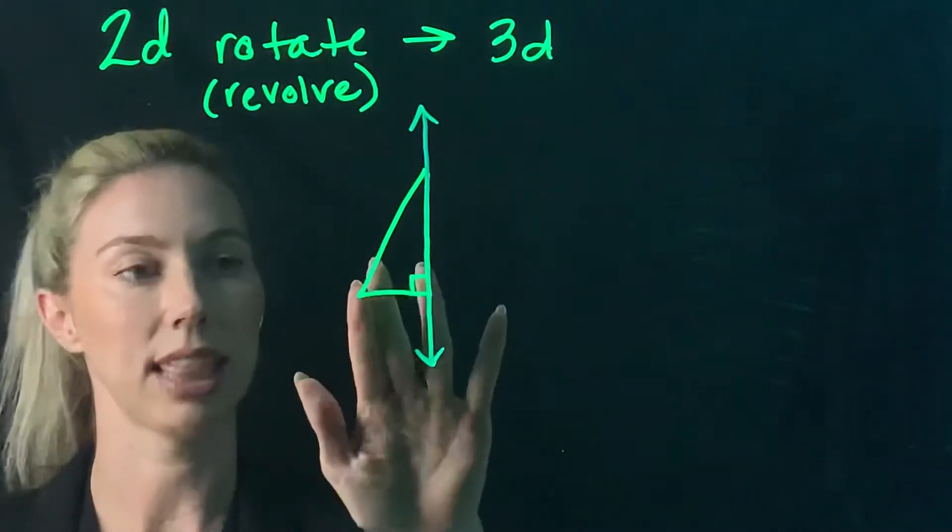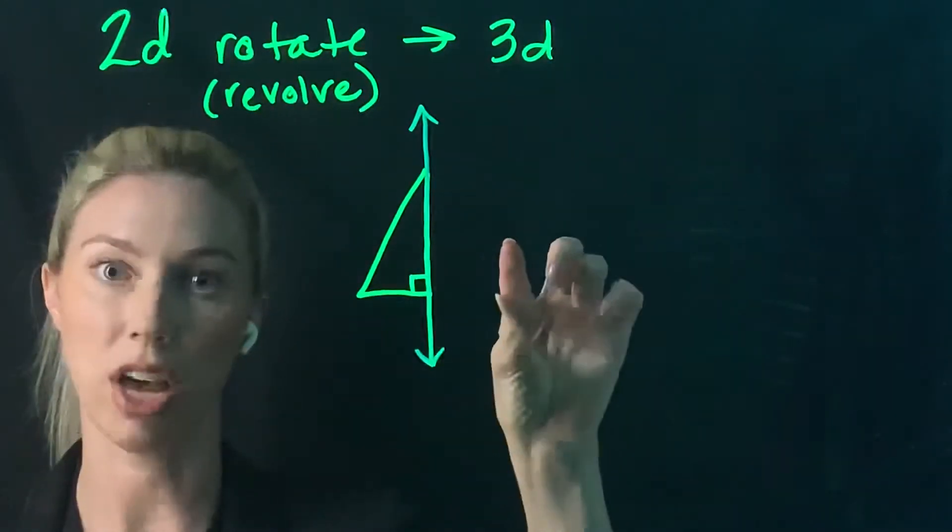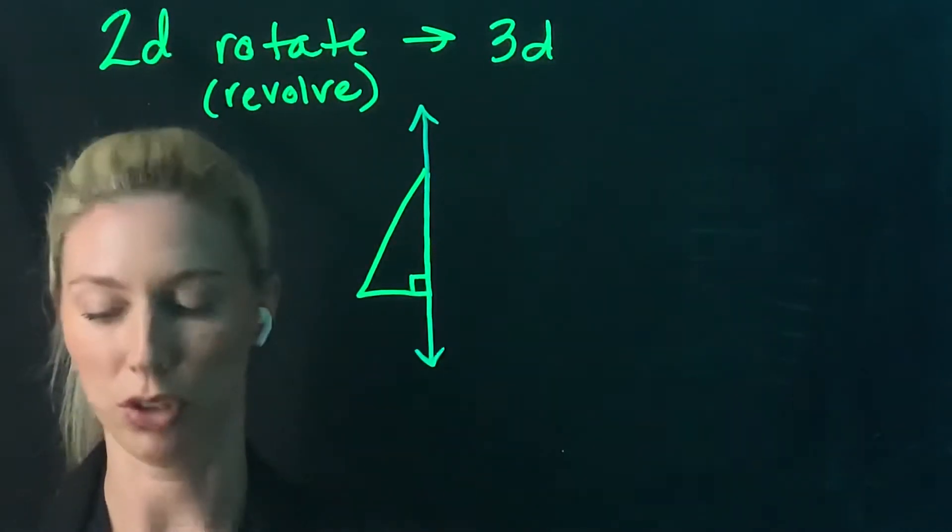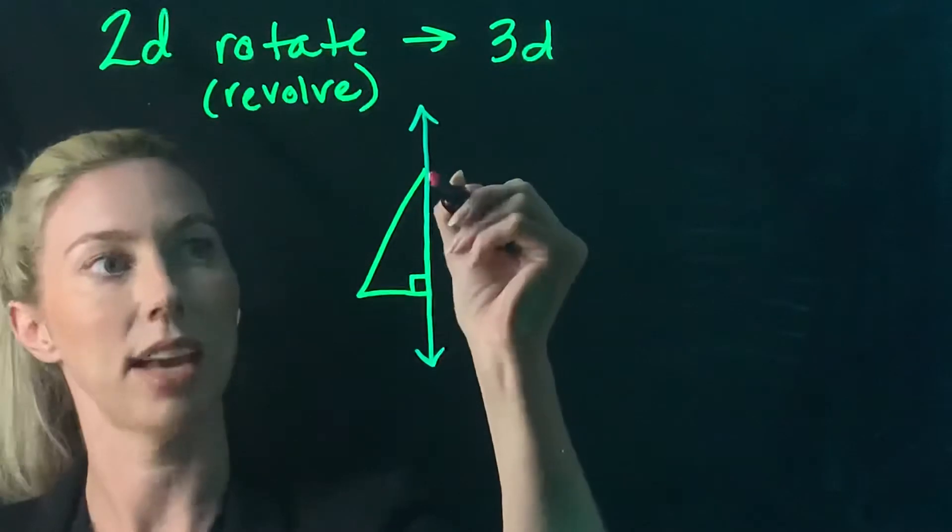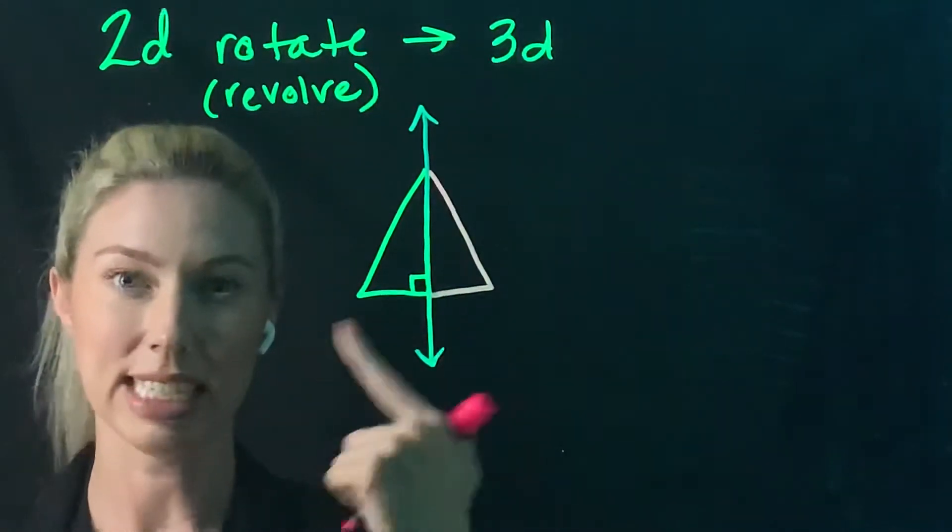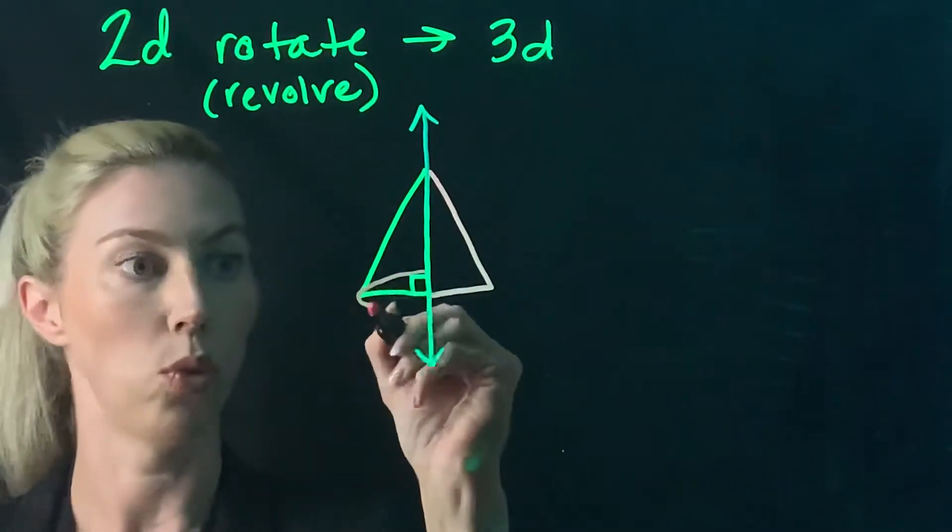As you're thinking about it, as this is revolving, it's leaving an impression of itself each time at every interval, creating a three-dimensional shape. If I was going to draw it, I draw a reflection on the other side of the line, and then to indicate it's rotating, I draw an oval.